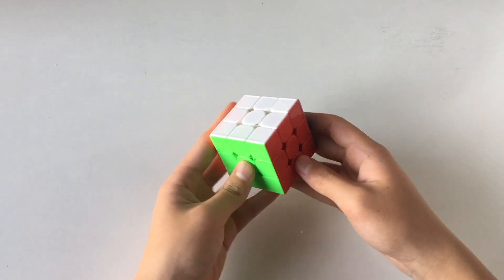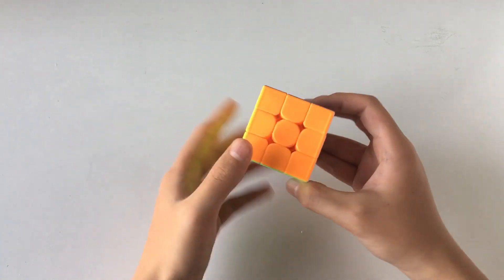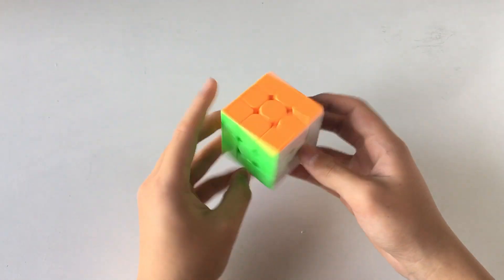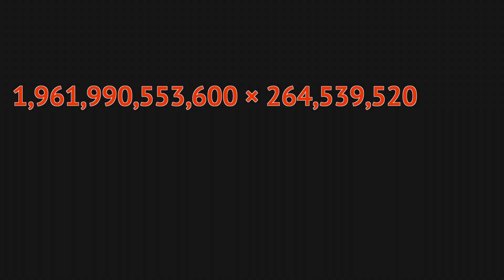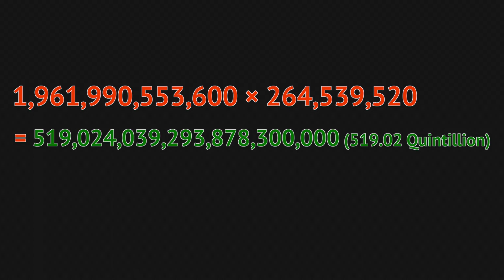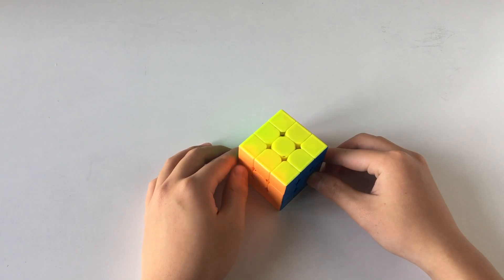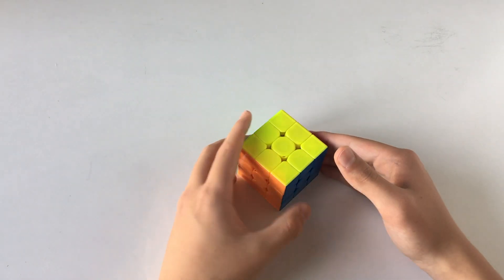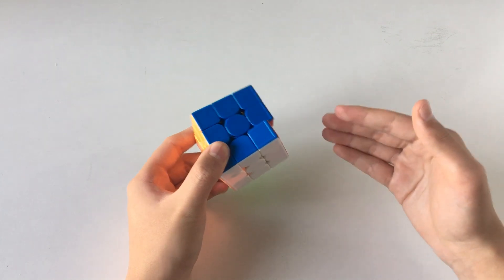Now, we only need to multiply these together to get the total different combinations on the Rubik's cube. So these two numbers multiplied together would get you, round of applause. Oh, it's not the right number. It's this big number right here. That is nowhere close to the 43 quintillion that we were looking for.